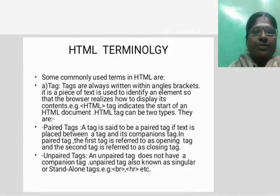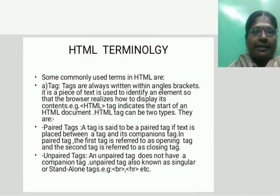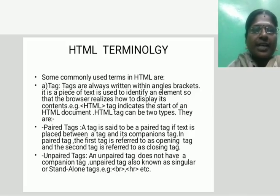HTML terminology. Some commonly used terms in HTML are: tag, paired tag, and unpaired tag. Tags are always written within angle brackets. A tag is a piece of text that is used to identify an element so that the browser knows how to display its contents.